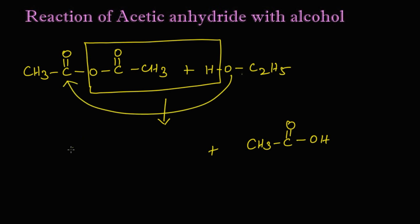To this part, so we get CH3-C double bond O-O-C2H5. This is an ester which is called ethyl acetate. Let's write the name for these structures.